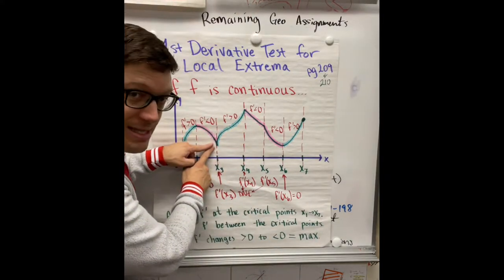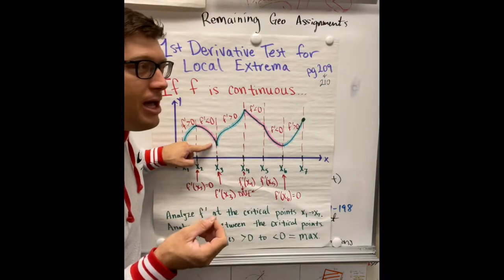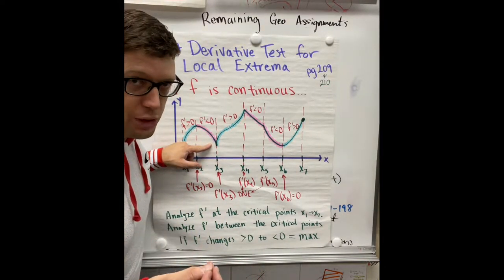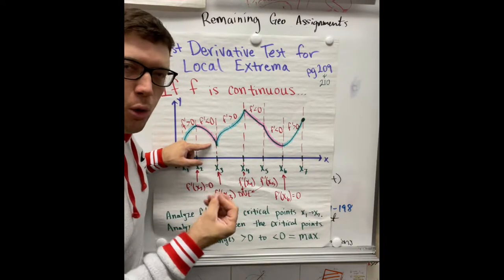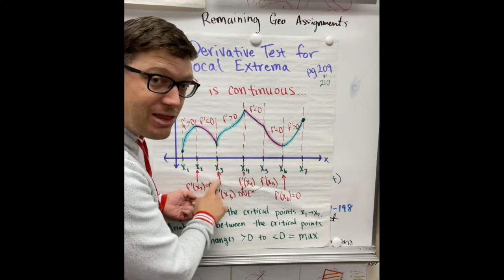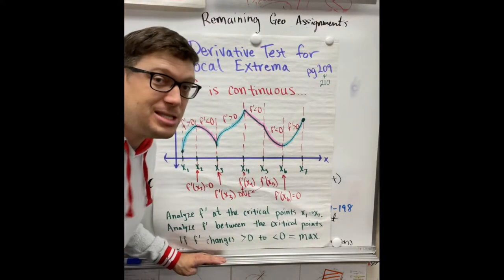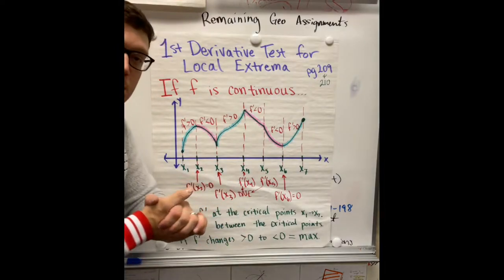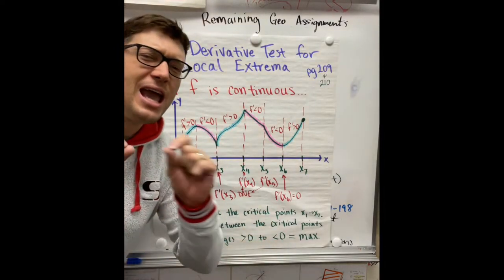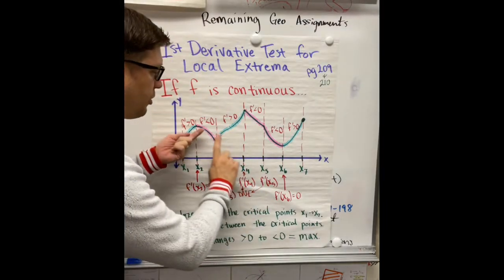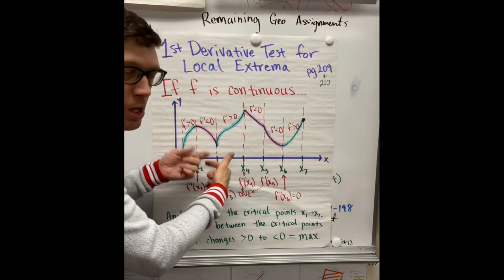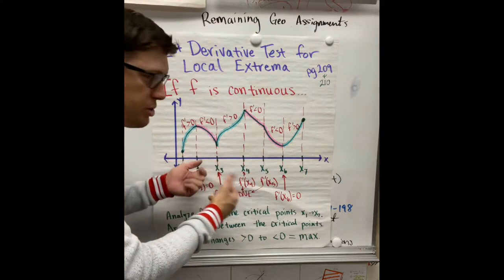But in this section, this is a place where we have a, not a discontinuity, but we have a place of non-differentiability, like a cusp or a corner. And in that place, the derivative at that critical point doesn't exist. It's still a critical point. Critical point is where the first derivative equals zero or doesn't exist. But we have to analyze whether or not on the left side or the right side, there's a change in the slope, a change in the nature of the first derivative.